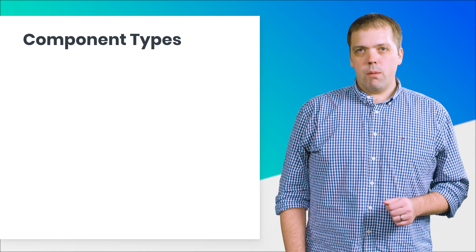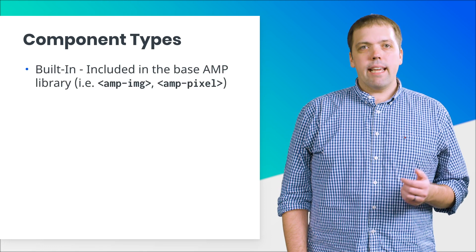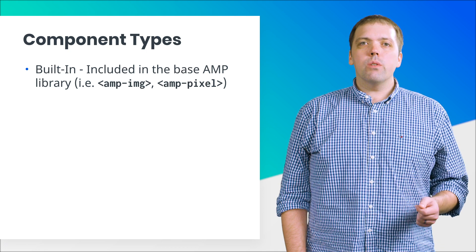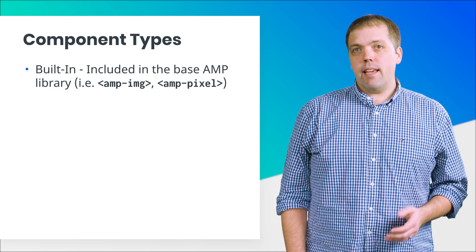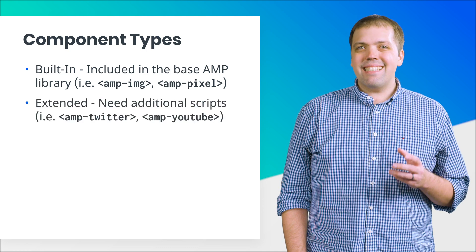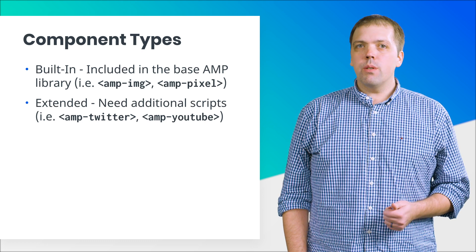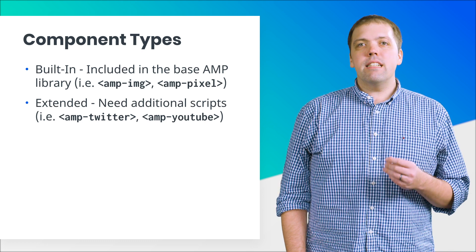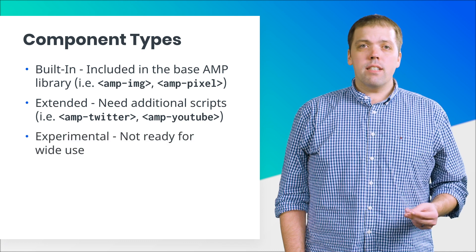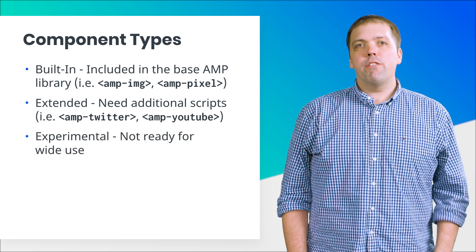AMP has three types of components. There are built-in components, like AMP image, AMP pixel, and so on — these are included in the base AMP library. Then there are extended components, like AMP Twitter, AMP YouTube, and so on — these need additional scripts. The third type, experimental components, are not yet ready for wide use.